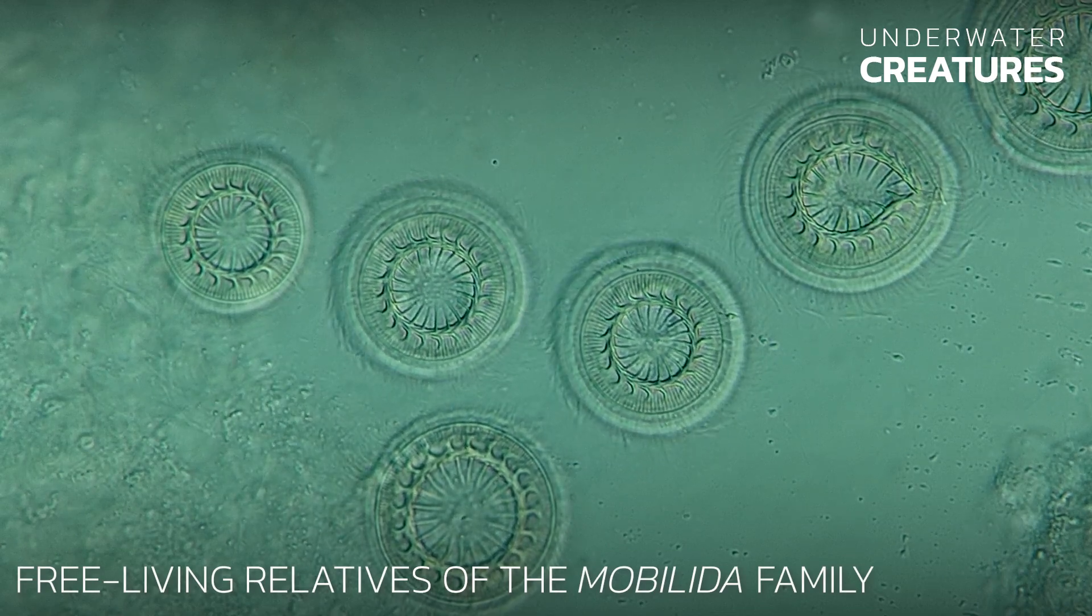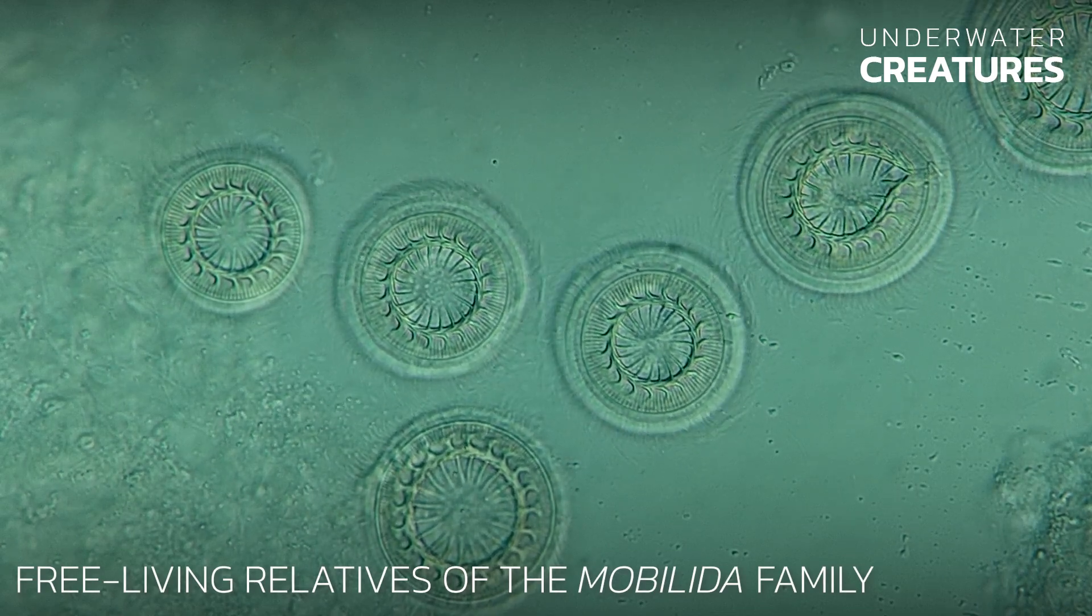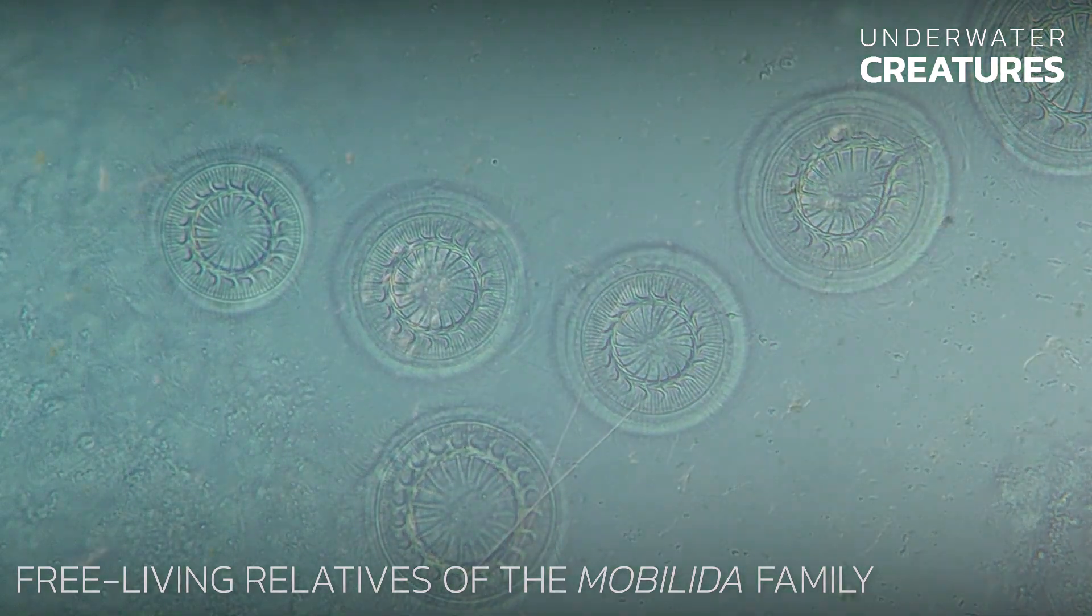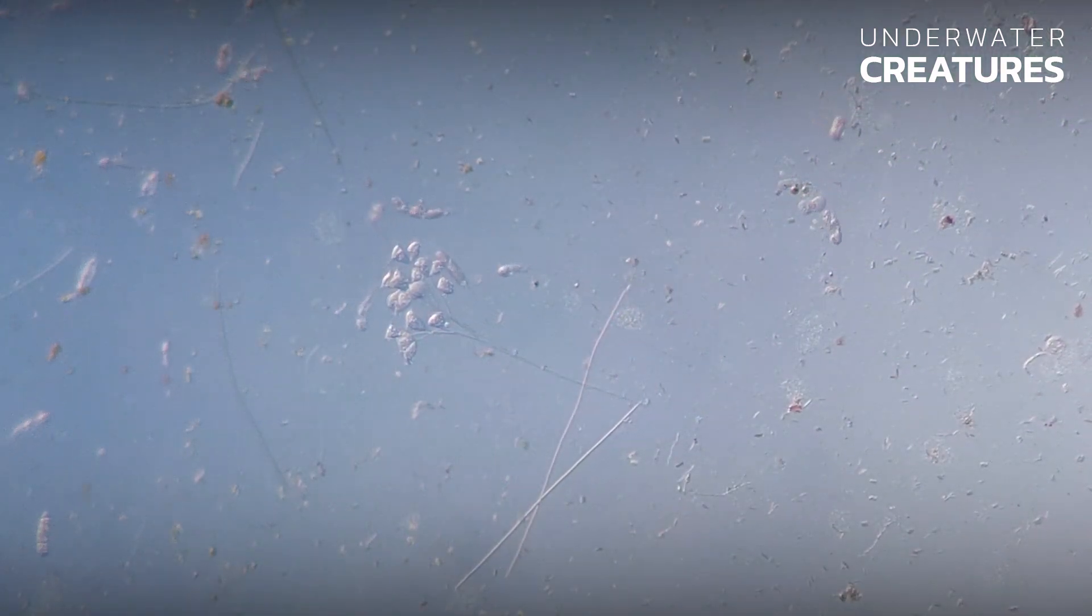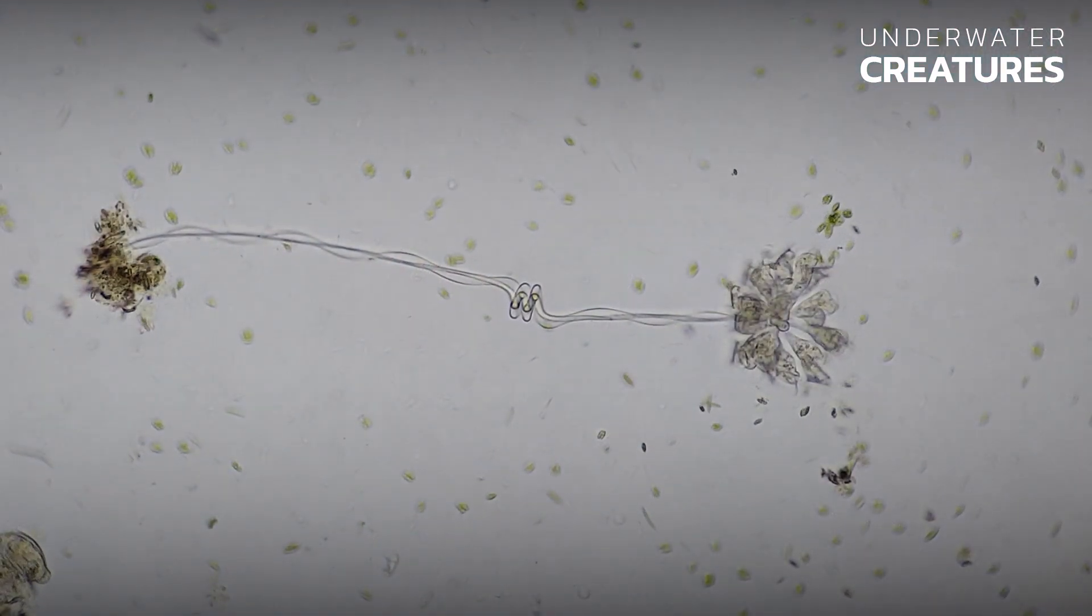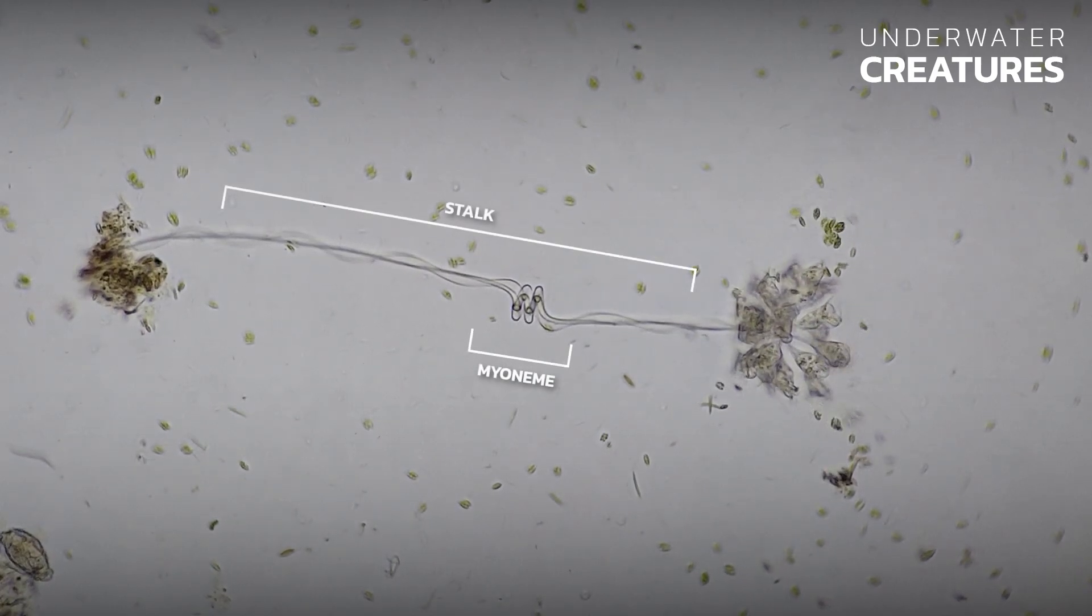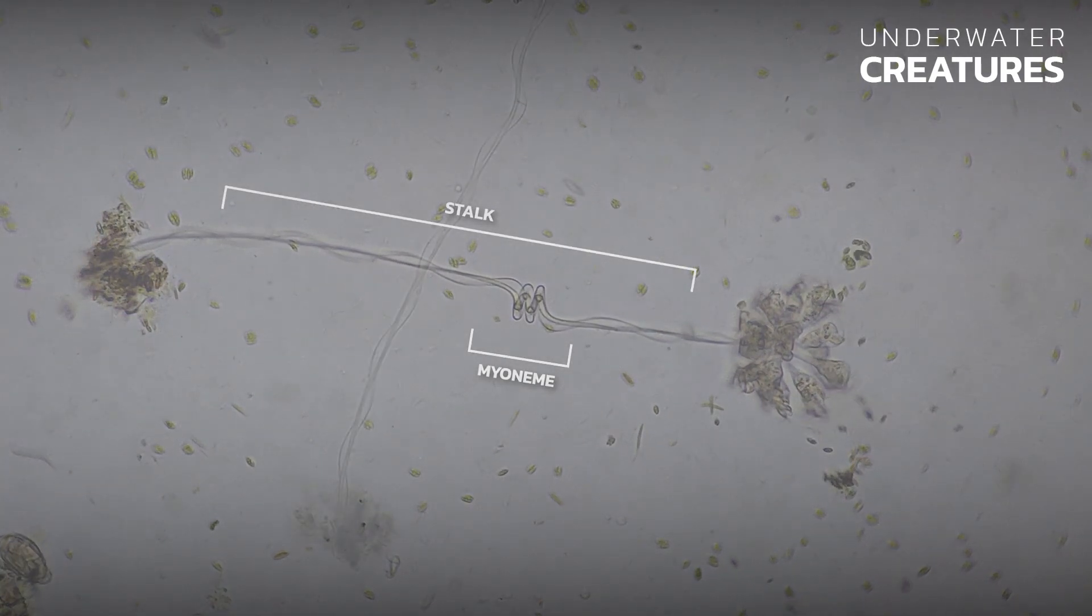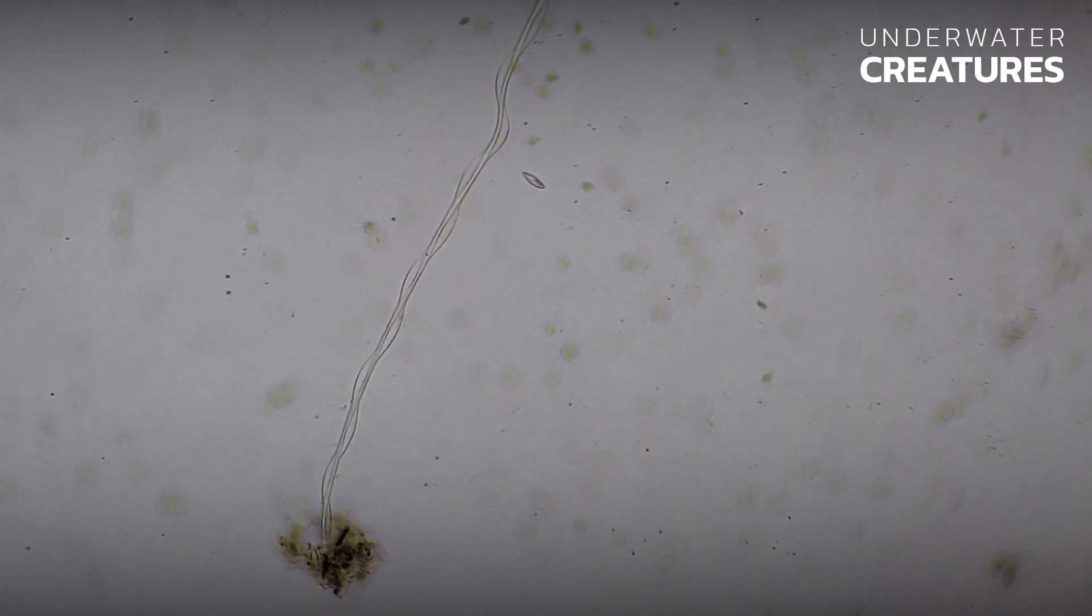Carchesium need a substrate to which they attach with a stock. This stock contains the myoneme, a special contractile fibril that individual cells or the entire colony can rapidly contract when danger occurs.